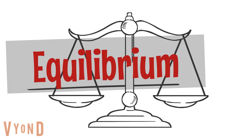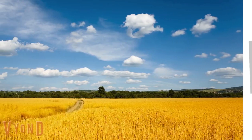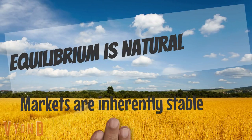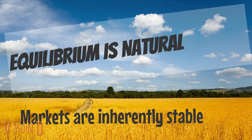Equilibrium is a price and a quantity where both the consumers and the businesses are satisfied. Consumers get to buy the quantity that they want to buy. Businesses get to sell the quantity that they want to sell — balance in the marketplace. For Adam Smith, equilibrium is natural; it's where the market goes on its own.